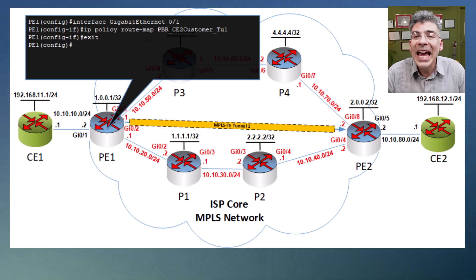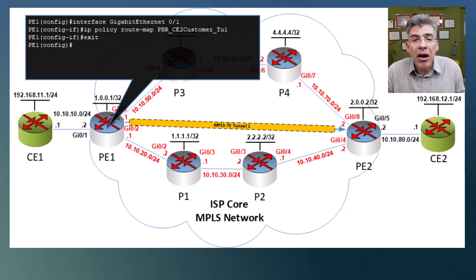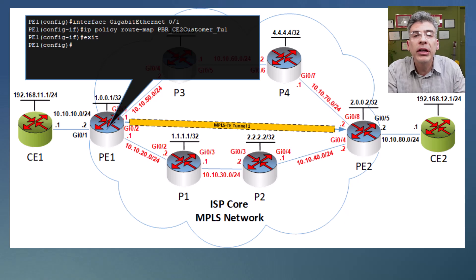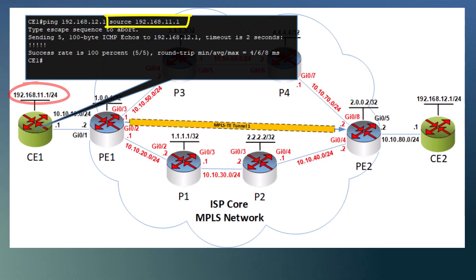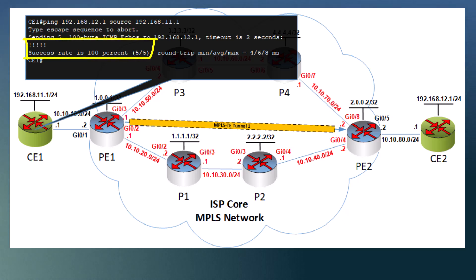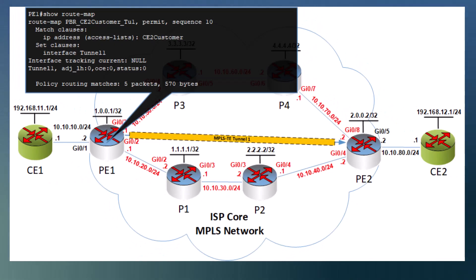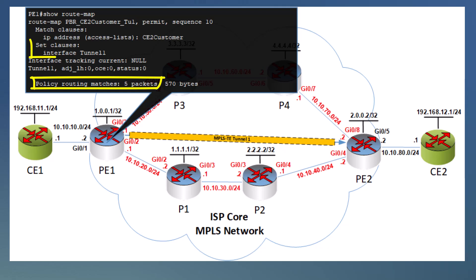Now to verify our work, we can't just look at our routing table on PE1 because PBR does not actually change the routing table — it acts as an exception to normal routing behavior and takes place before any standard routing lookup. Let's ping from CE1 to the destination network, using the loopback interface address as the source. It doesn't really matter what source address we use since our ACL will match any source address. The ping is indeed successful. Looking at our route map, we can see five matches and the set clause is set to tunnel1 — so these five packets were successfully policy-based routed via the tunnel.